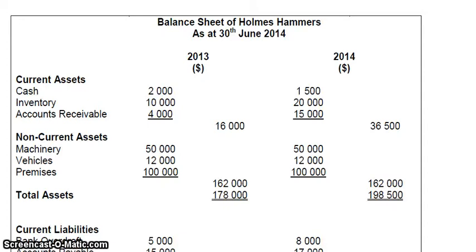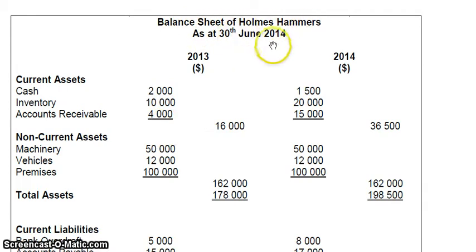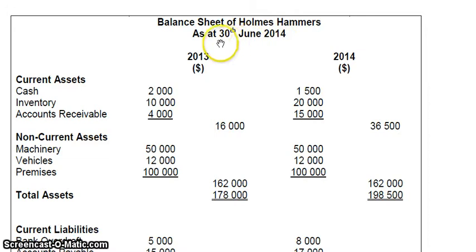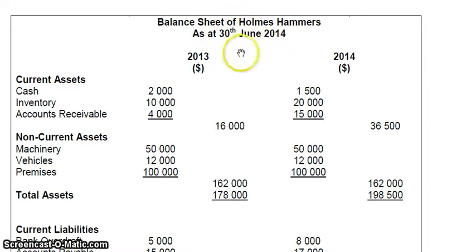Today we're going to start with the very basics of how to read a balance sheet. The balance sheet we're going to be using today is for the business Homes Hammers, and it's as of the 30th of June 2014. The 30th of June is the end of the financial year, and the new financial year starts on the 1st of July.